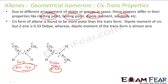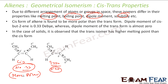So the cis isomer is considered to be more polar. It is observed that in the case of solids, the trans isomers have higher melting points than cis isomers. So they have different dipole moments and different physical and chemical properties.